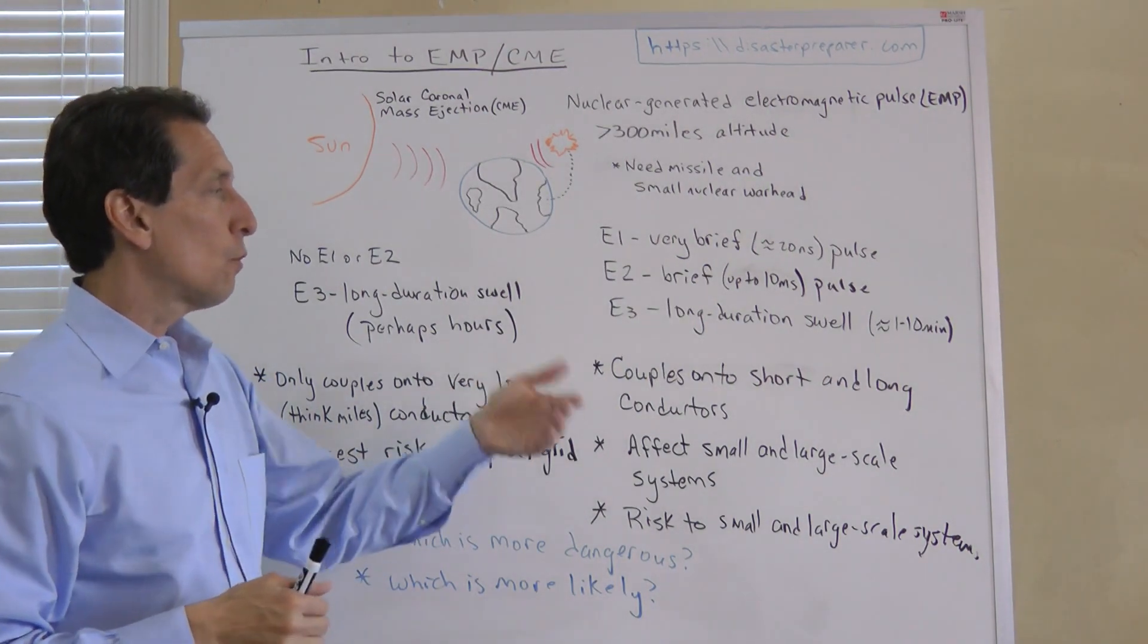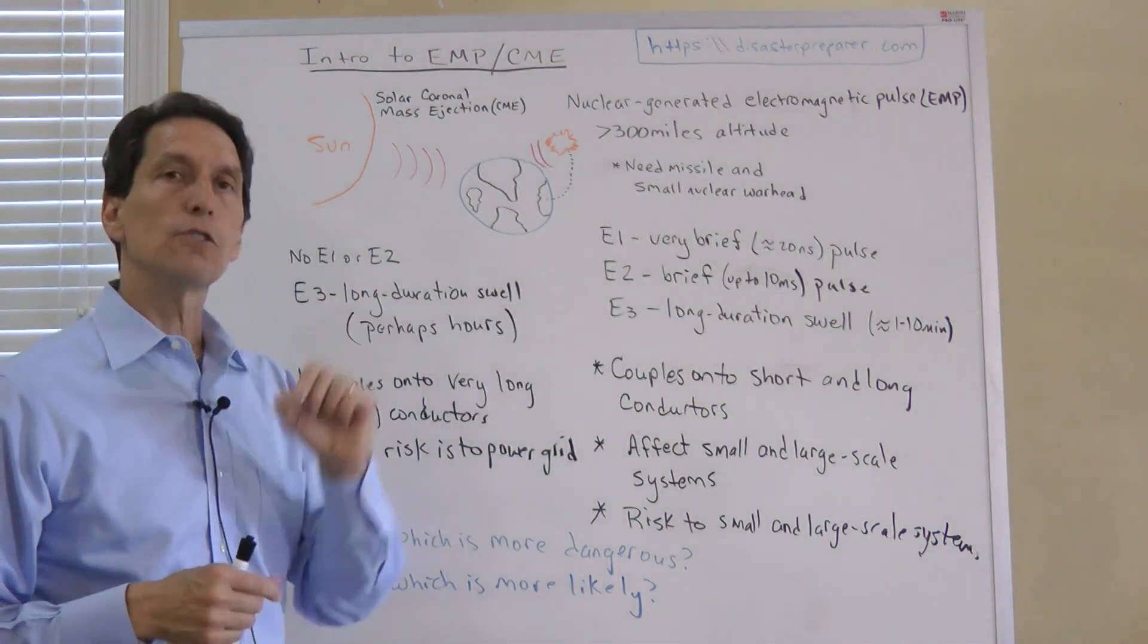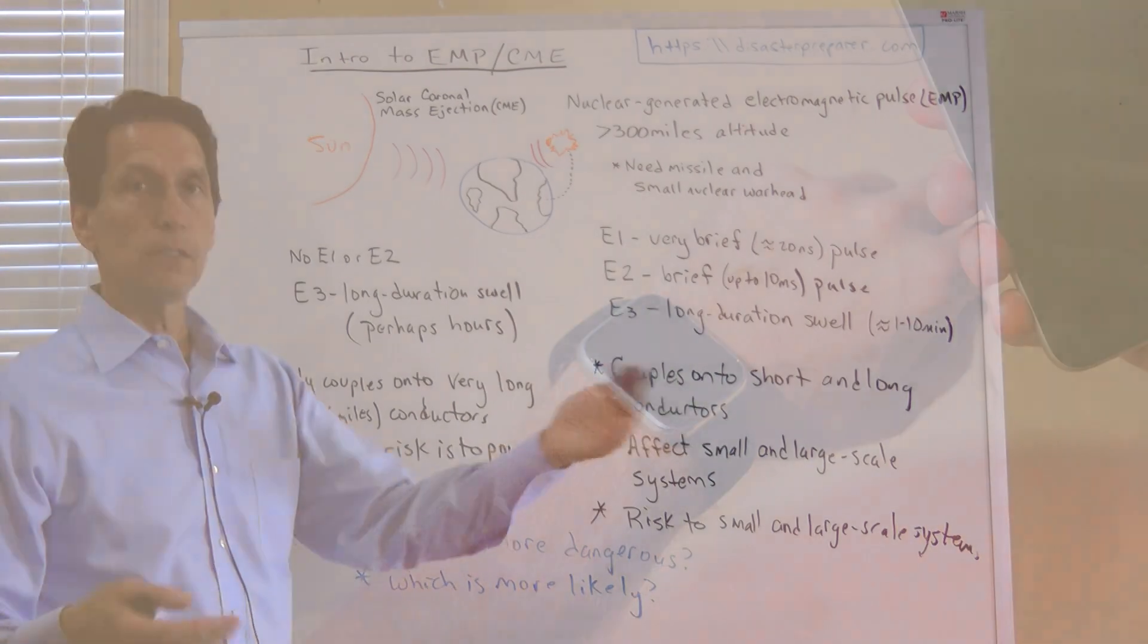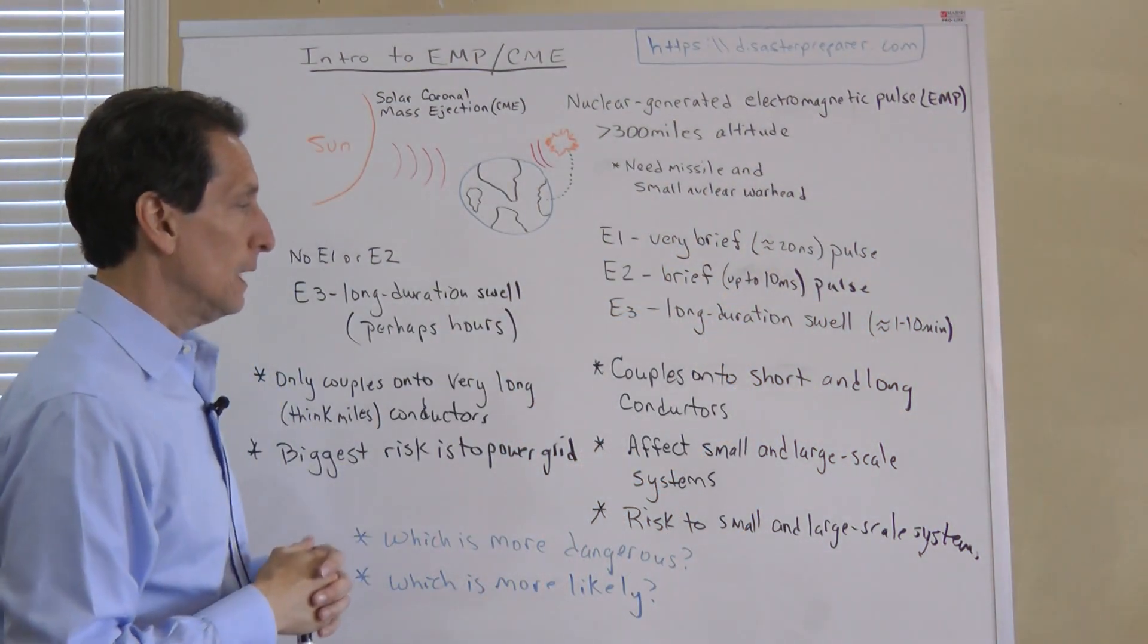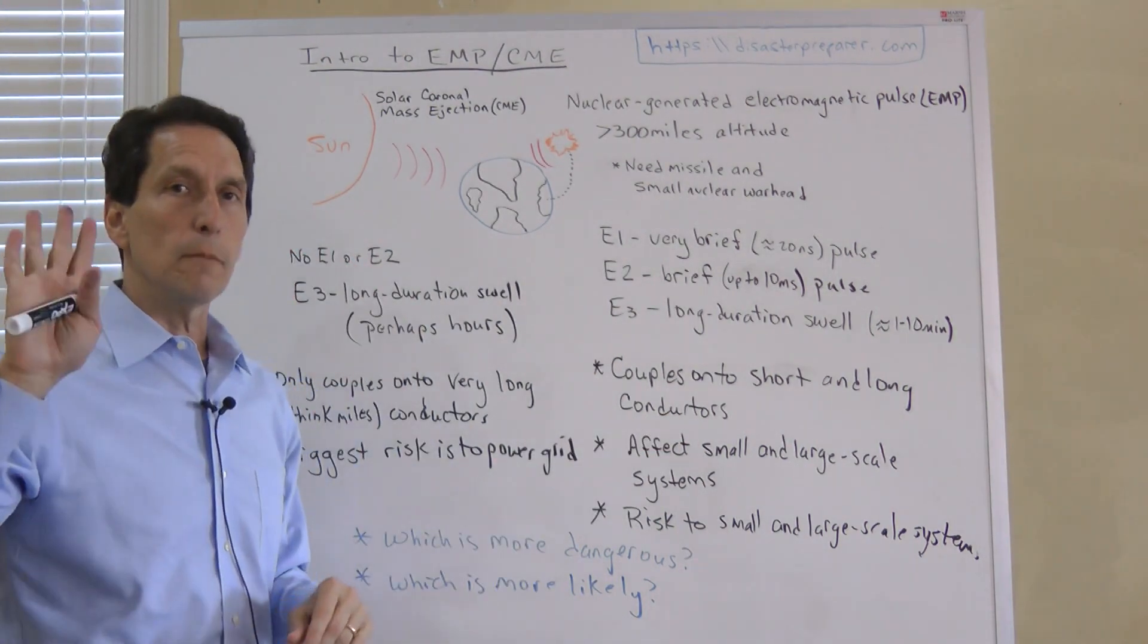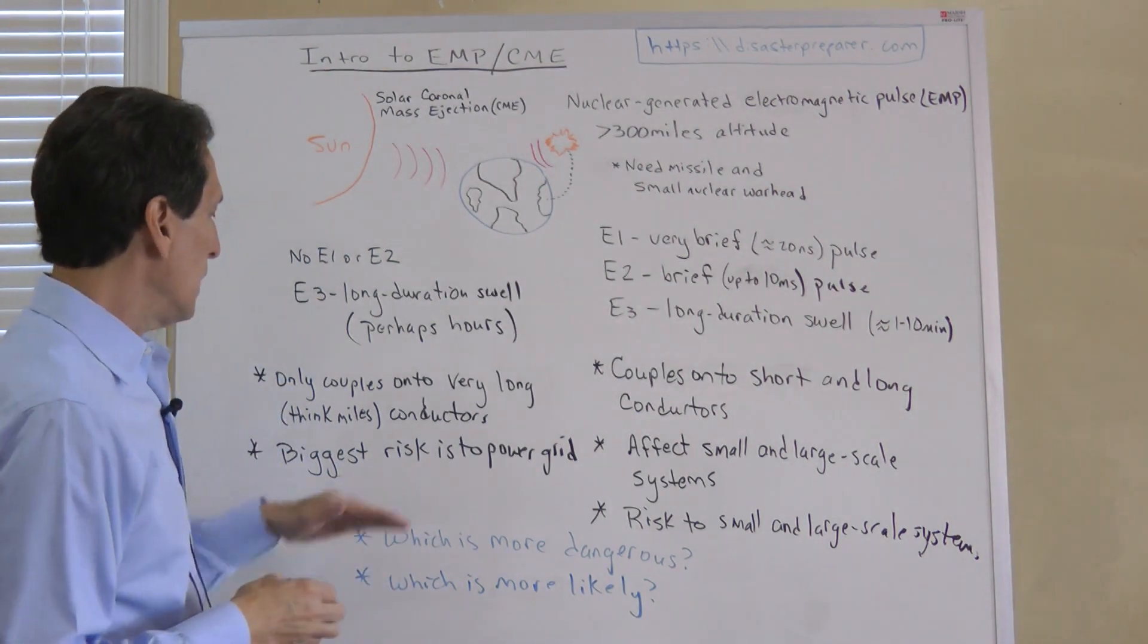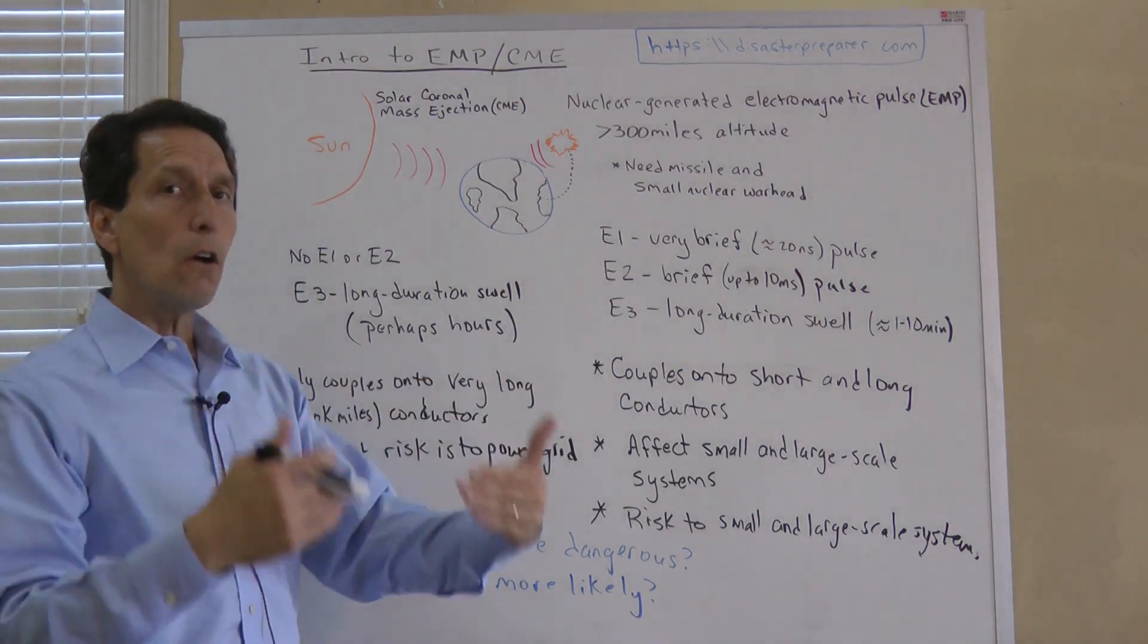So it couples to both short and long conductors. Long conductors could be power lines or telephone lines. Short conductors could be the tiniest trace on your circuit board in some electronics. Because of that, it can affect both small and large scale systems—power grids all the way down to maybe a digital watch. Very broad spectrum of things it could affect. Its risk is really across the gamut. It can cause damage to your car, power line, telecommunication systems. That's why the nuclear EMP is so worrisome—it can cause damage to so many different things.